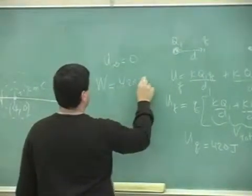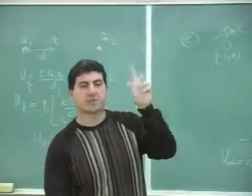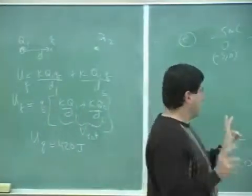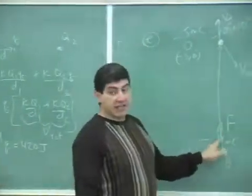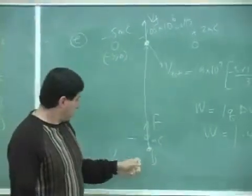So the work is equal to 420 joules. So there's two ways of answering if the work is positive or negative. Okay, let me summarize it and then we're done. If the charge is negative, it likes to go towards higher potential.